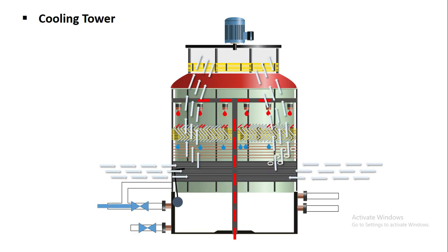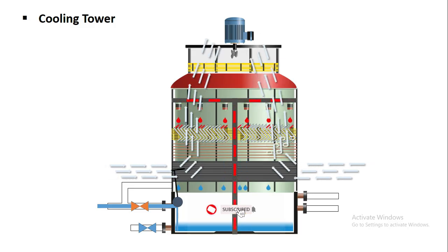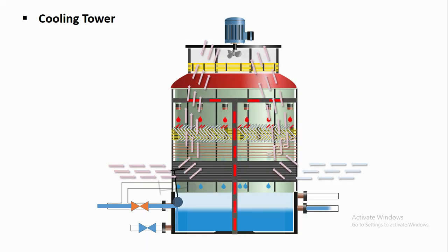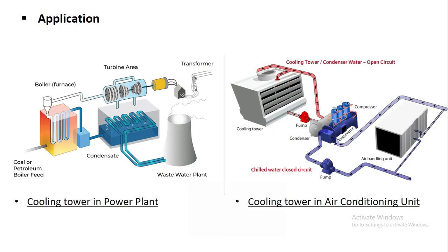When warm liquid is brought into contact with unsaturated gas, part of the liquid evaporates and the liquid temperature drops. The most important application of this principle is in the use of cooling towers to lower the temperature of recirculated water used for condensers and heat exchangers in power plants and air conditioning units.